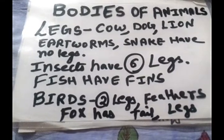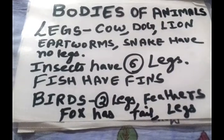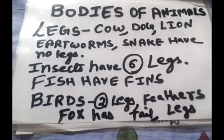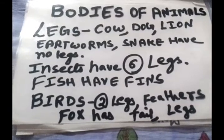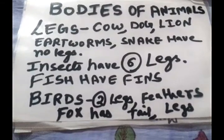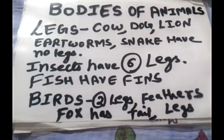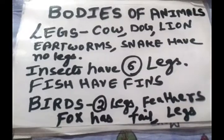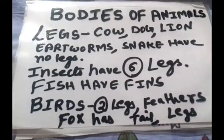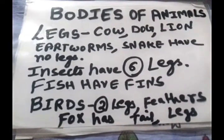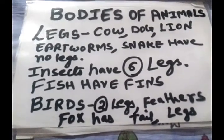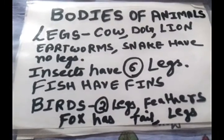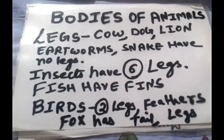In the same chapter, chapter number one, Animals Around Us, we will see the next topic: Bodies of Animals. We will look at which type of body animals have, and we will also see the parts of the body.